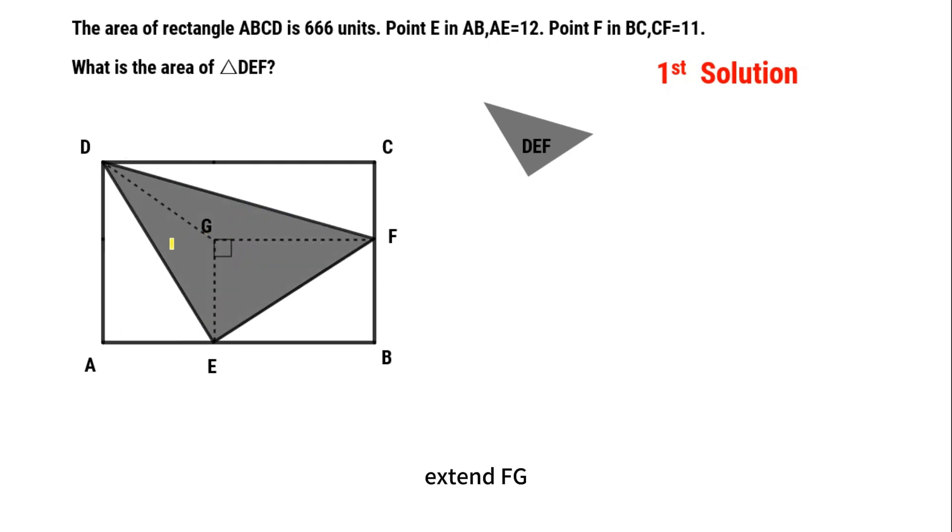Extend FG, intersect AD in point M. Let's focus on triangle DG, because AD parallel to GE. We can get the area of triangle DG is equal to MGE.